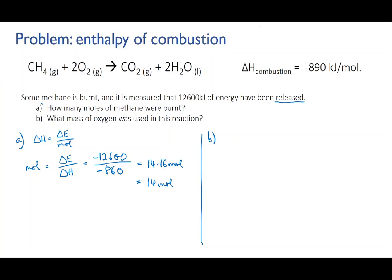In part B, we need to use what we already know to figure out how much oxygen was used. This is a simple stoichiometry problem. We know that the molar ratio of methane to oxygen from the equation is one to two, and we know that we have 14.16 moles of methane.